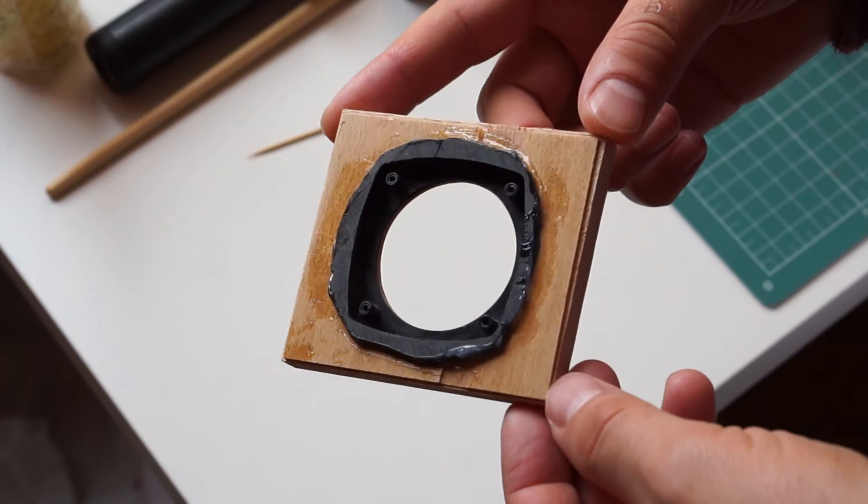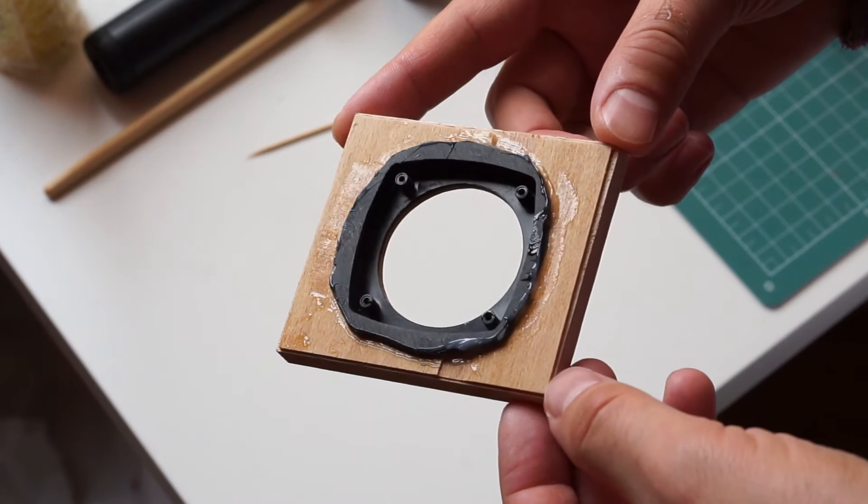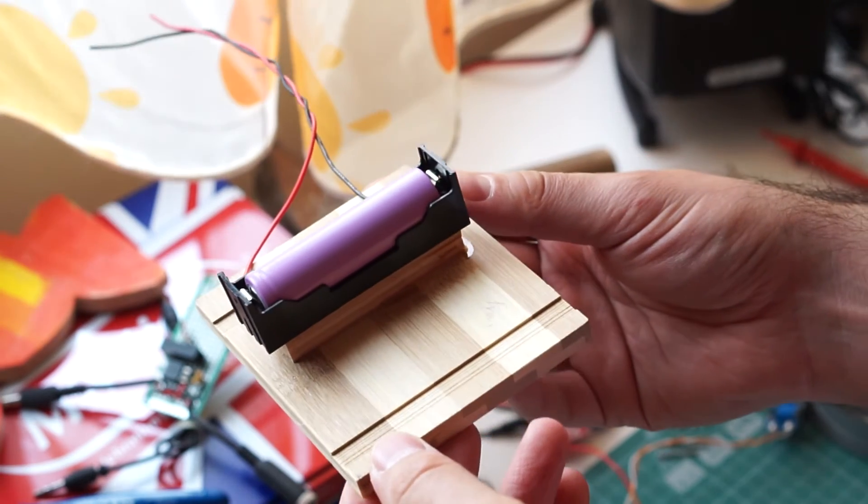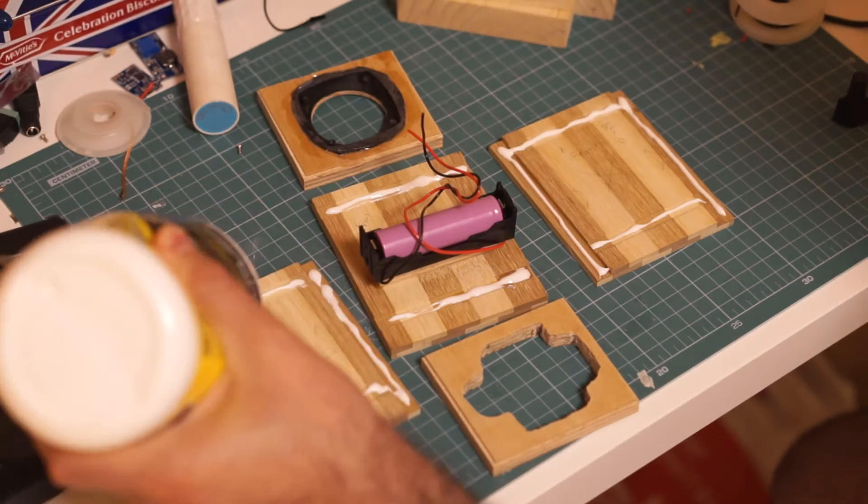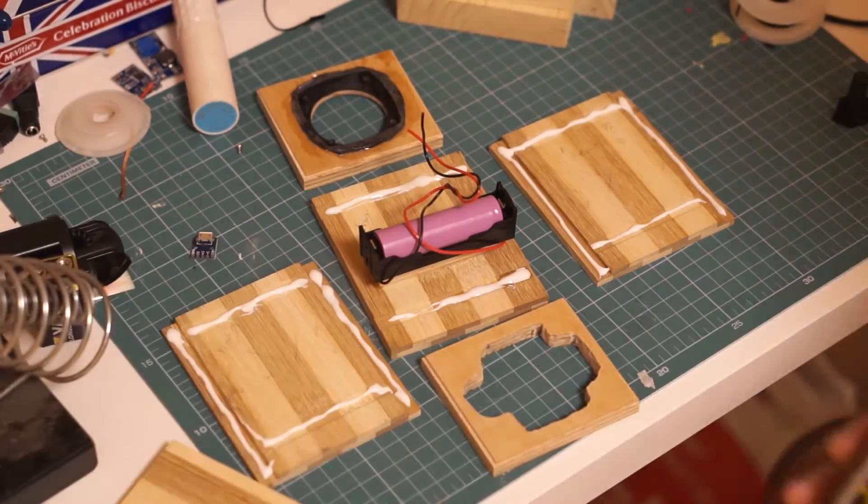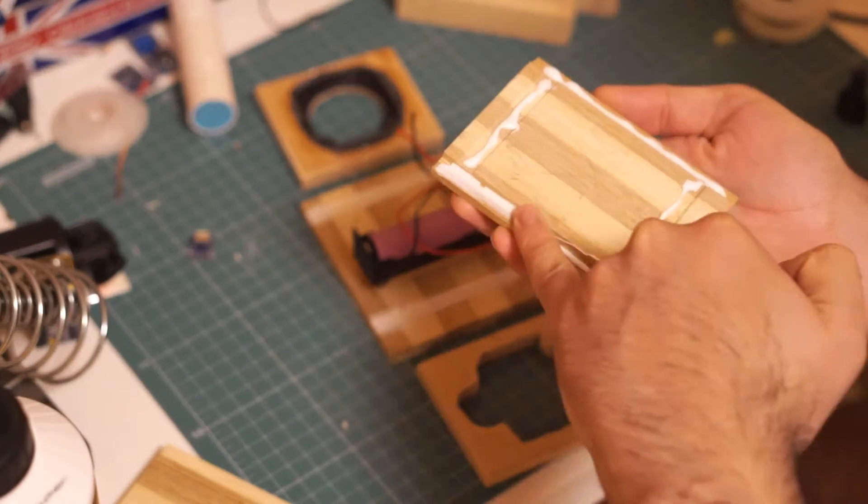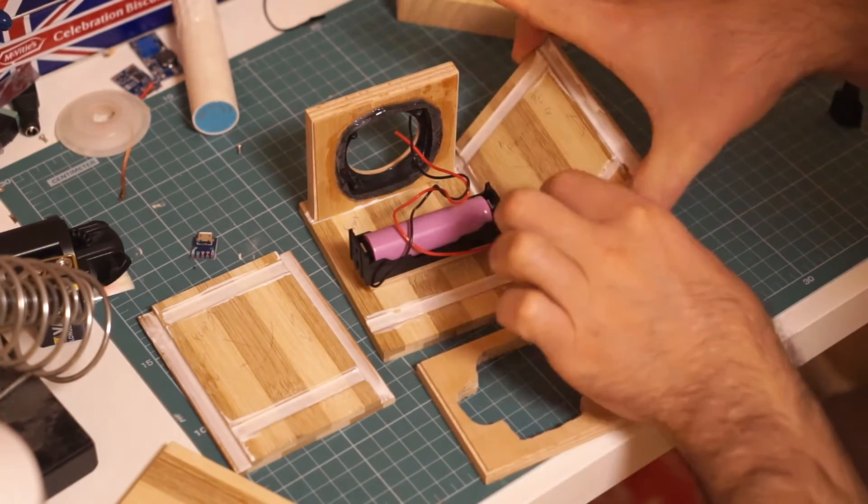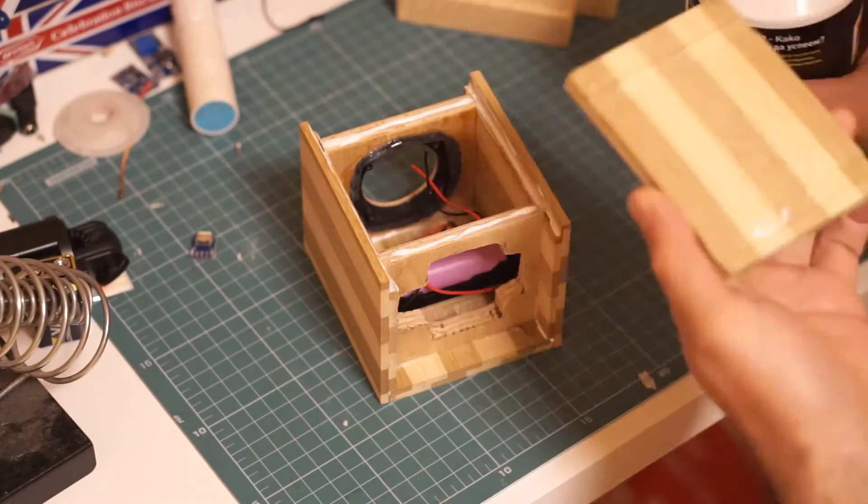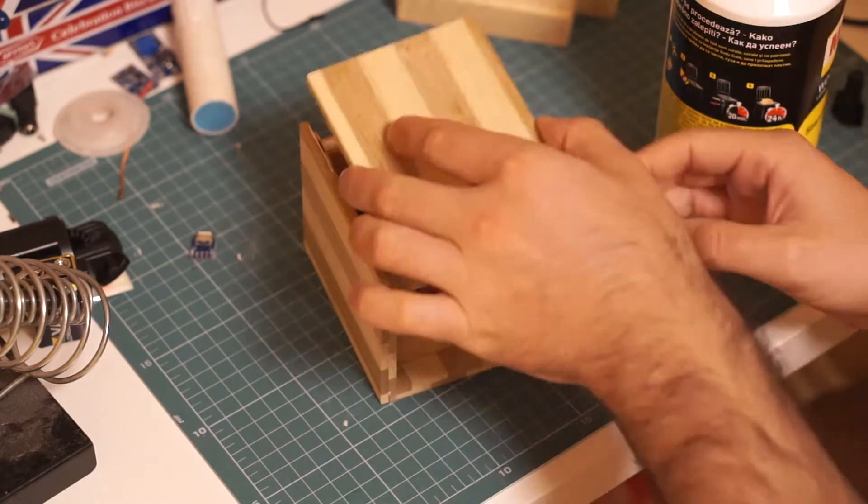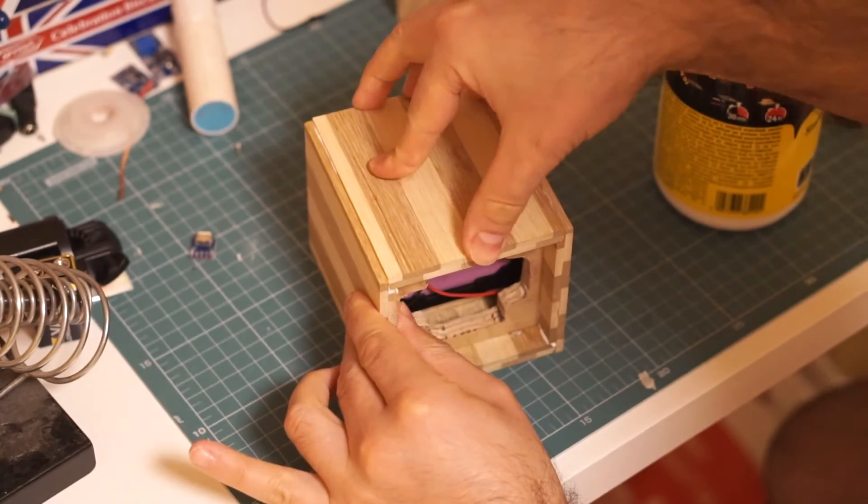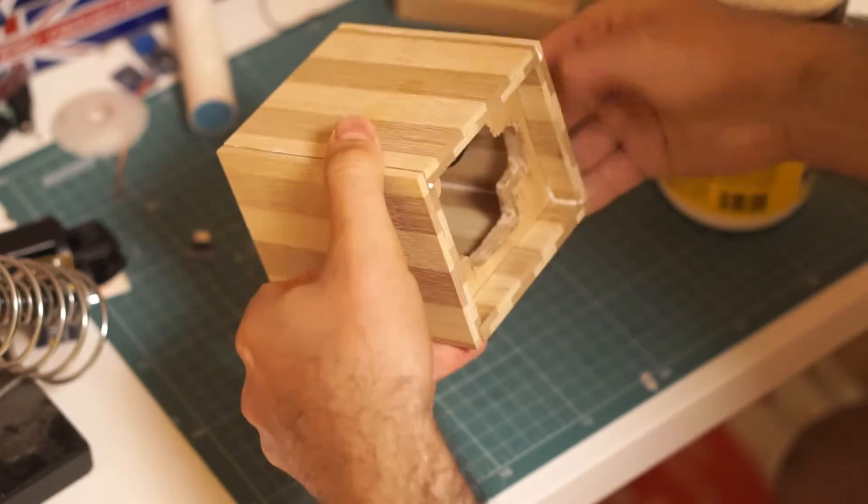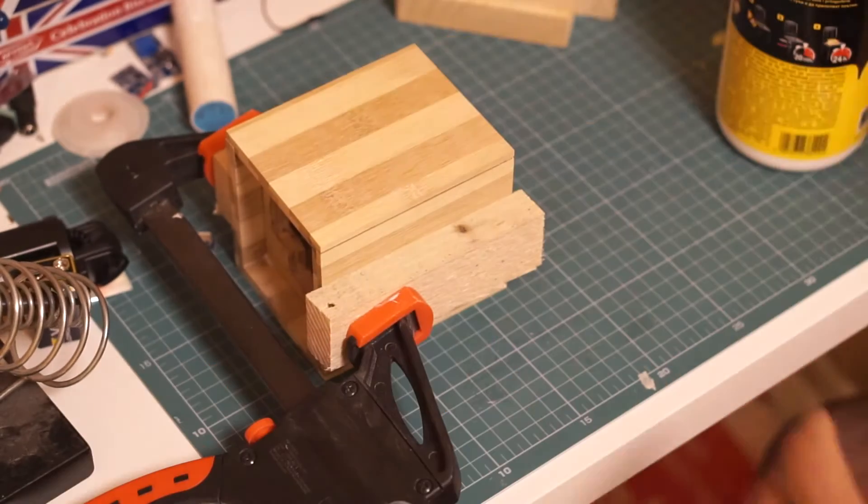Next, I could safely glue the plastic piece to the front side. I also glued the battery holder to one of the bamboo pieces. Later that evening, I glued all 6 pieces together using regular wood glue. Then I clamped them together and let the glue dry completely overnight.